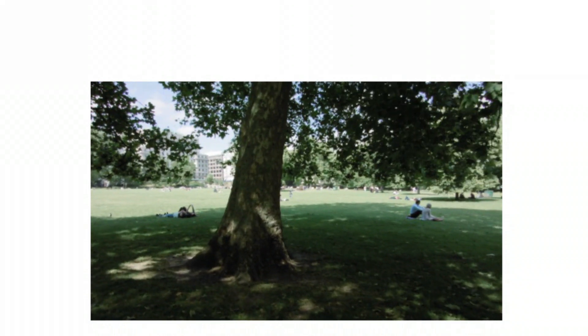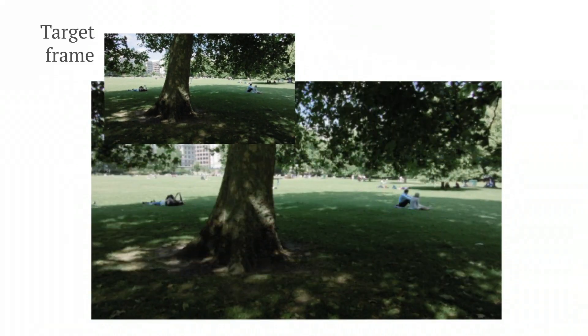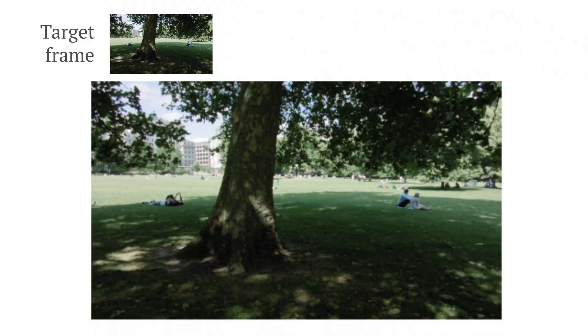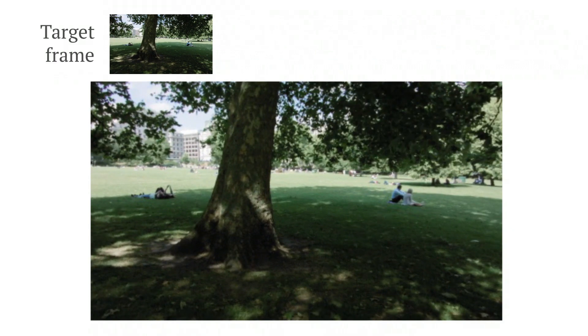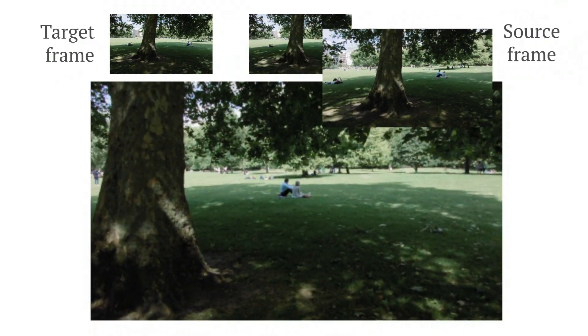One frame from the video is selected as the target view. This is the training time input to the network. Nearby video frames act as source frames, which are used to form the hidden geometry learning signal.